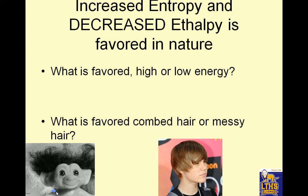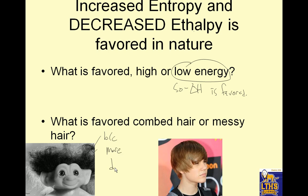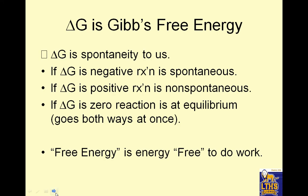Increased entropy and decreased enthalpy are favored in nature. We talked about enthalpy being heat, so you want more disorder and less heat energy. Low energy is favored, so negative delta H is favored. What is favored — combed hair or messy hair? Messy, because more disorder. Delta G is Gibbs free energy. Delta G represents spontaneity: will it happen or not? If delta G is negative, the reaction is spontaneous. If delta G is positive, it is non-spontaneous. If delta G is zero, the reaction is at equilibrium — both directions proceed at the same rate, though it looks like the reaction stops, it doesn't. Delta G is called free energy because it is energy free to do work.